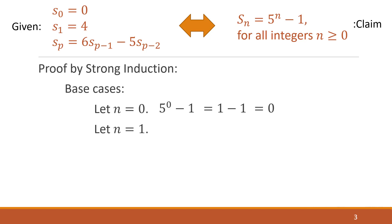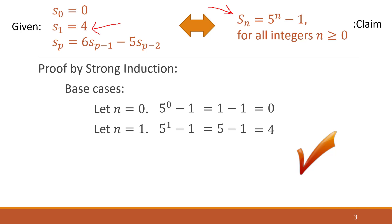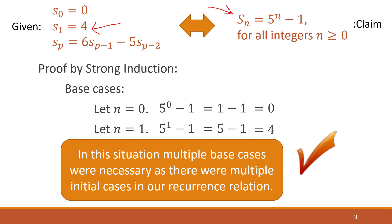Now let's take a look at the next base case, when n = 1. This matches our second base case in the recurrence relation. Plugging into the formula we're claiming, 5^1 − 1 = 5 − 1 = 4, which does indeed match what we're given. So both base cases work, and we can be done with the base case portion of our proof by induction.